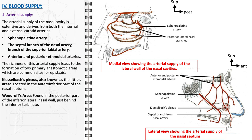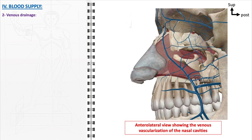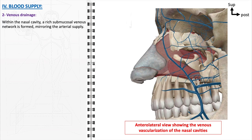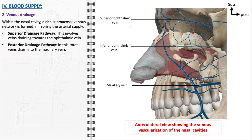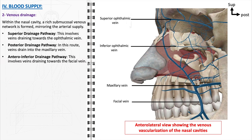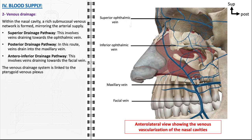The venous and lymphatic drainage systems of the nasal cavity are complex networks that play crucial roles in maintaining the physiological balance of this region. Within the nasal cavity, the venous drainage mirrors the arterial supply, forming a comprehensive submucosal venous network organized into three primary drainage pathways. The superior drainage pathway involves veins draining towards the ophthalmic vein. The posterior drainage pathway involves veins draining into the maxillary vein. The anteroinferior drainage pathway involves veins draining towards the facial vein. These venous pathways converge into the pterygoid venous plexus, a significant structure for the overall venous return from the nasal cavity.